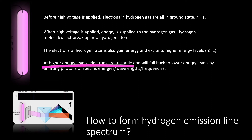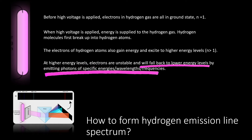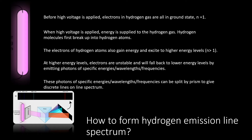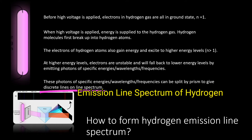When at high energy levels, the electrons are unstable. Hence, they will fall back to lower energy levels by emitting photons with specific energies, wavelengths, or frequencies. When these photons of specific energies, wavelengths, or frequencies pass through the prism, discrete lines will be formed. These discrete lines are the emission line spectrum of hydrogen.